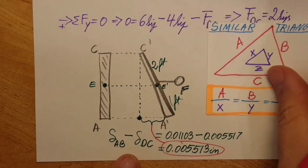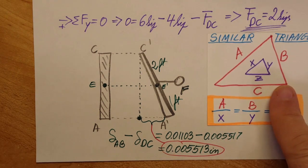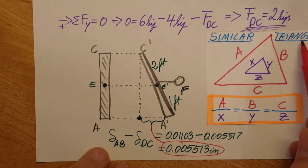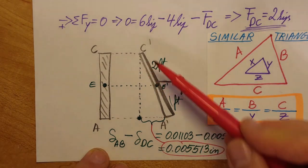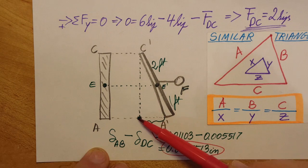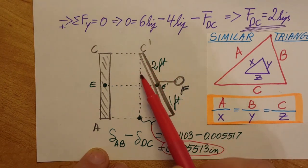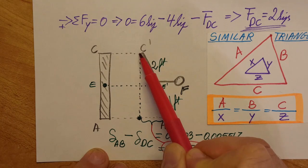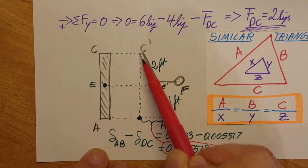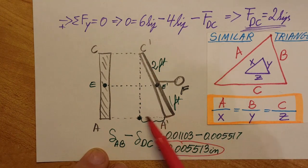And this distance is the same as up here, and this distance we can find. This is the deflection or deformation of rod AB. I'm gonna calculate it right here: deformation of rod AB minus the deformation of rod DC. This will give me a value which is this distance right here. Now we're gonna apply this rule from trigonometry, similar triangles.